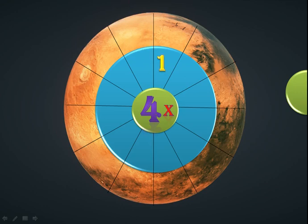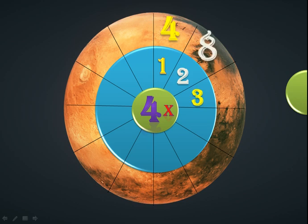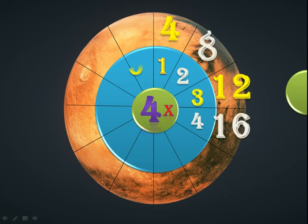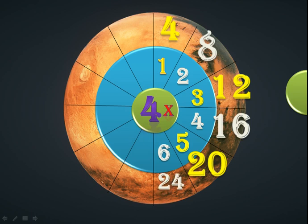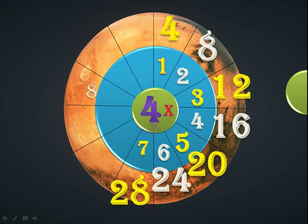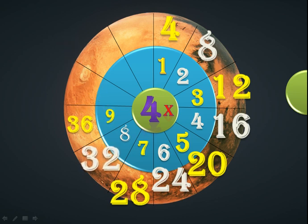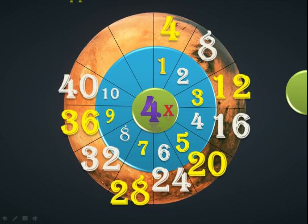4 times 1 equals 4. 4 times 2 equals 8. 4 times 3 equals 12. 4 times 4 equals 60. 4 times 5 equals 20. 4 times 6 equals 24. 4 times 7 equals 28. 4 times 8 equals 32. 4 times 9 equals 36. 4 times 10 equals 40. 4 times 11 equals 44. 4 times 12 equals 48.